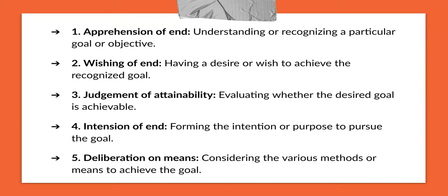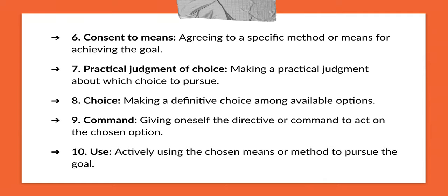Some options: first, ask mom or dad for money to get an iPhone 15; second, work, get a good job, earn and save enough money; third, steal — which is surely not a good idea. So we have three methods: get someone else's iPhone, ask for money, or work for it. The sixth one is consent to means — agreeing to a specific method or means for achieving the goal. The stealing option is definitely a bad idea — that gets you in jail — so we take that out, leaving two options: asking mom for money or working for it.